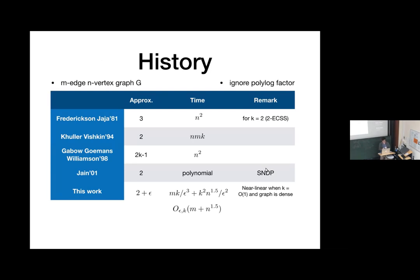For K equals 2, you can do 3-approximations in n-squared time. There are two different algorithms. The first is by Khuller and Vishkin, which gives a 2-approximation combinatorial algorithm with time m, n, and k — ignoring poly-logarithmic factors. If you focus on the best known running time, it's like n-squared, but you get an approximation factor of 2k minus 1.